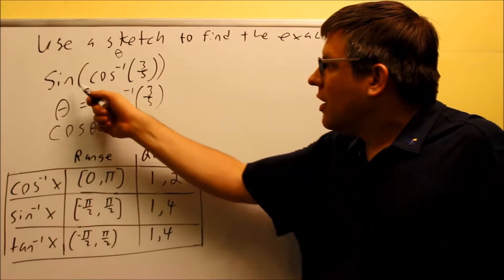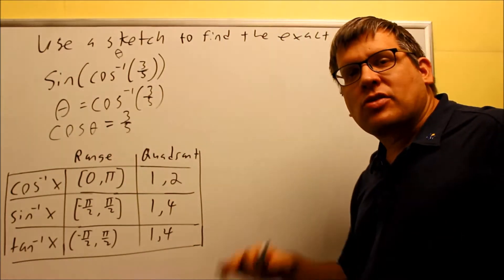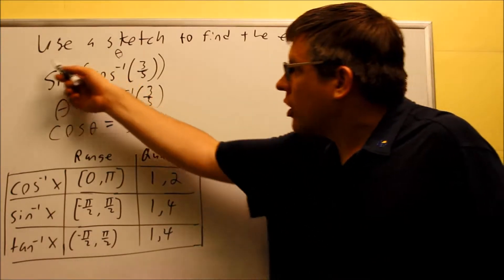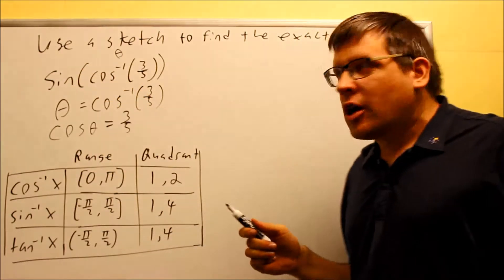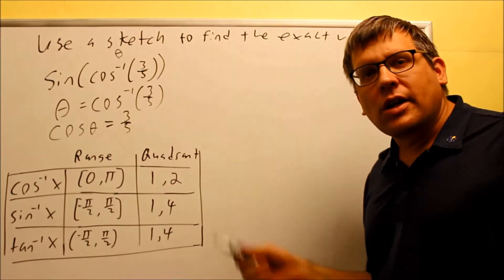Then once we have the triangle set up, the trig function on the outside is what we're going to draw our answer from. So based on the triangle we have drawn, we're going to choose sine from that triangle. So the inside one is for drawing the triangle, the outside one is for getting your answer.